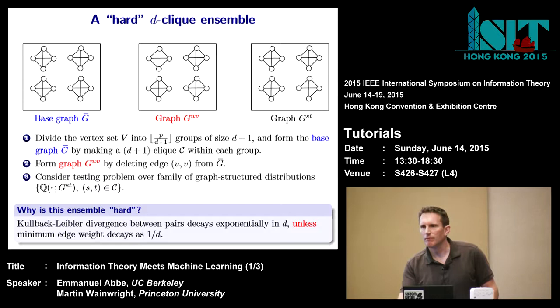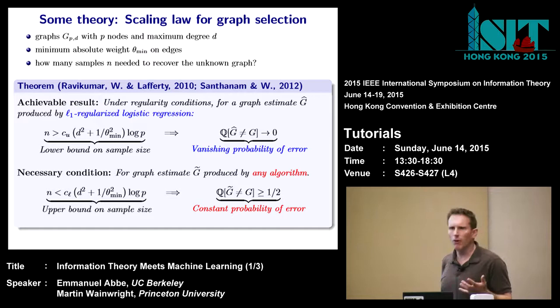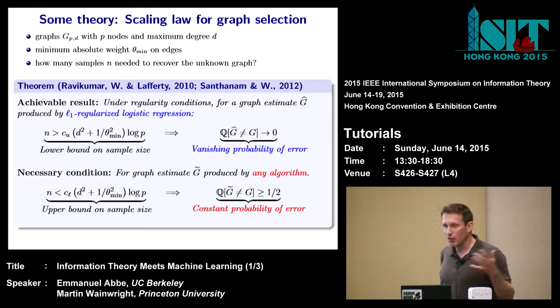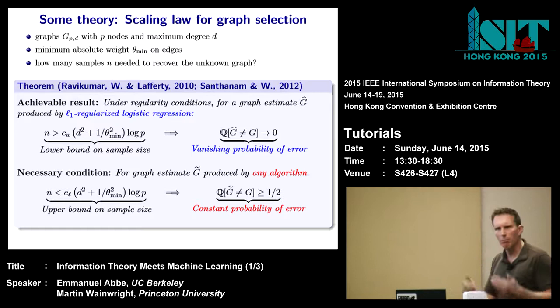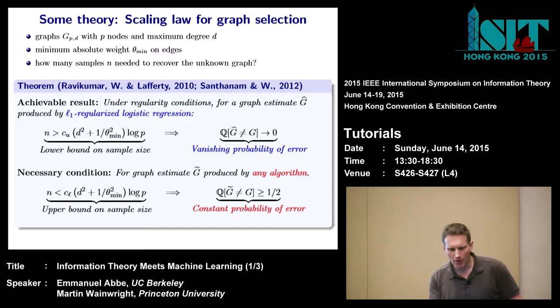Another question: does the practical method need to know the degree? This method is adaptive — it doesn't know the degree, and it achieves this rate regardless. When we prove the lower bound, we give the algorithm the degree, which only makes the result stronger. You could ask whether not knowing the degree would make the lower bound even stronger — that would be the price of adaptivity.